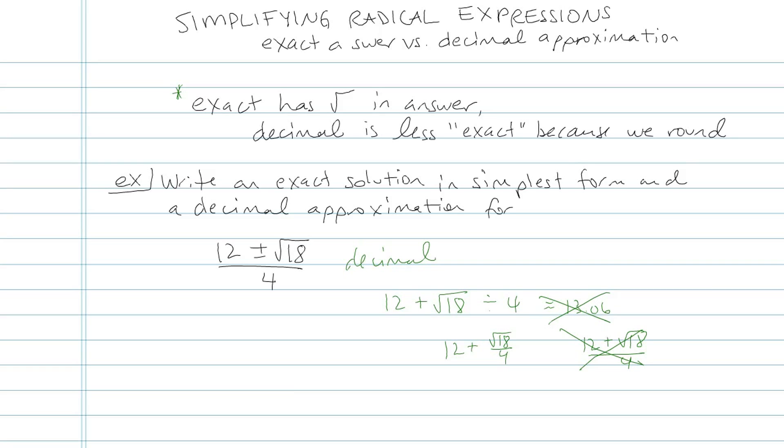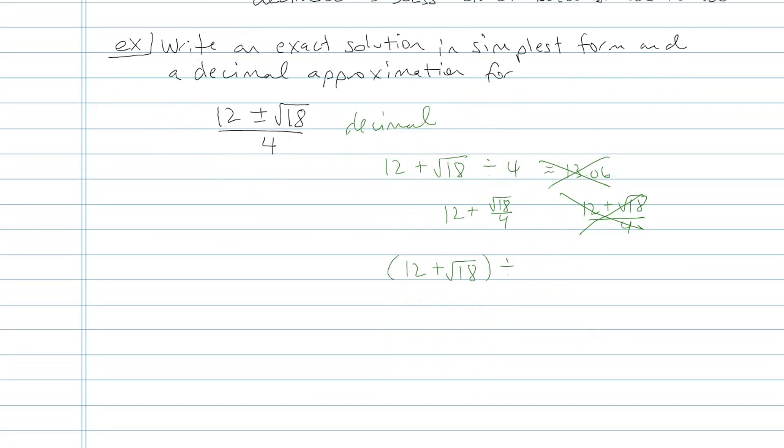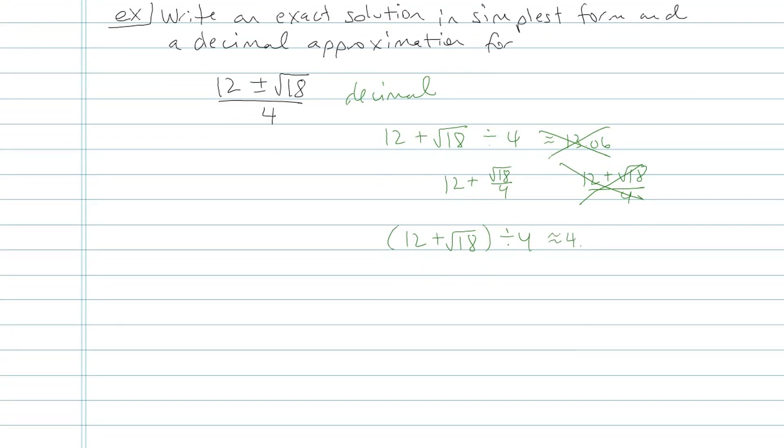Here's how you would do it properly. First, you type in either parentheses and do 12 plus root 18, close parentheses, then divide by 4. You should get approximately 4.06.